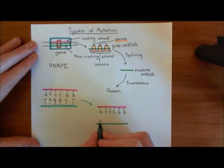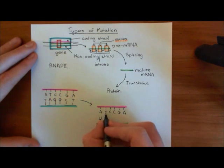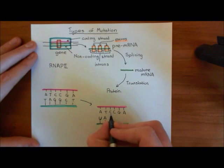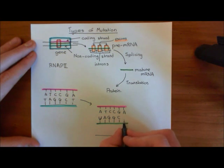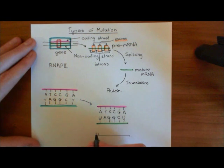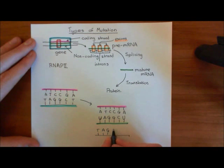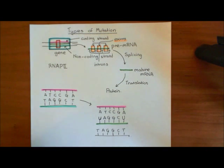For the first position, we need something complementary to adenine — in RNA that's uracil. The complementary base to thymine is adenine. The complementary base to cytosine is guanine. Again guanine for the next cytosine. The complementary base to guanine is cytosine. And complementary to adenine in RNA is uracil. We then complete the picture by putting the complementary sequence of DNA on the non-coding strand in turquoise.